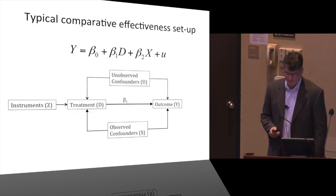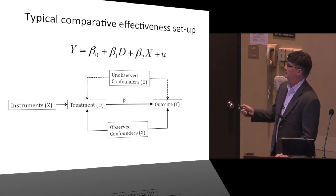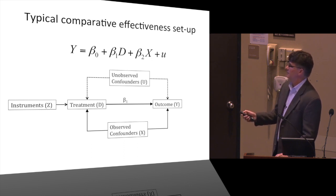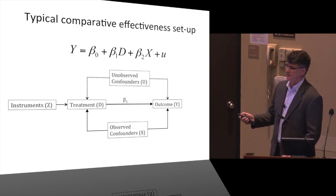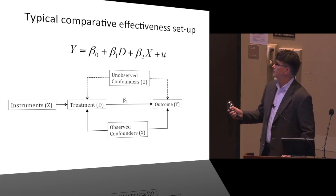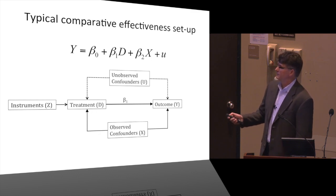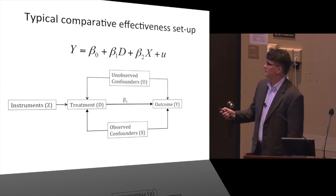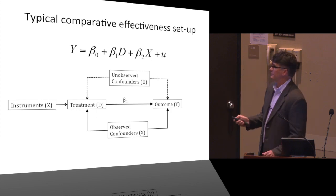This is the framework we're working from — a typical outcomes framework. We have an outcome Y, a treatment D, and we're interested in the causal effect of treatment on outcome. We have observed confounders X, unobserved confounders U that are correlated with both treatment and outcome but unobserved in your dataset, and instruments — things that are correlated with treatment but not with outcome except potentially through treatment.